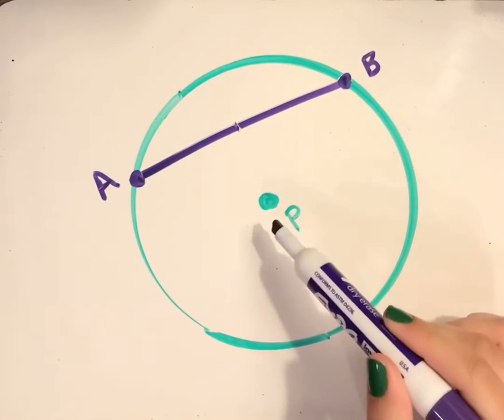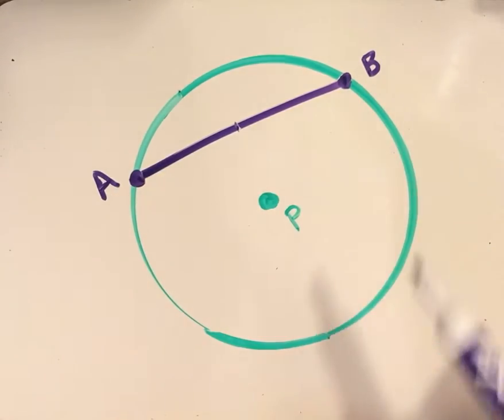So here we have a circle with center P, and I've drawn one chord in the circle, which is chord AB.